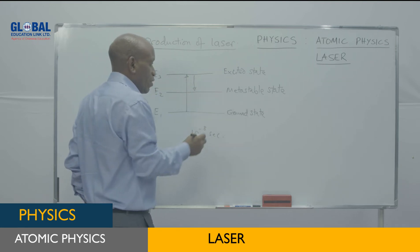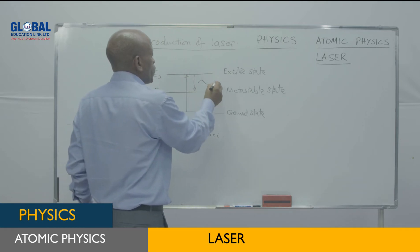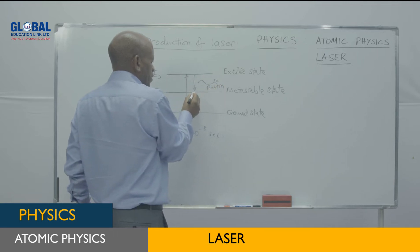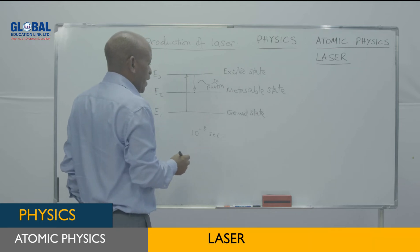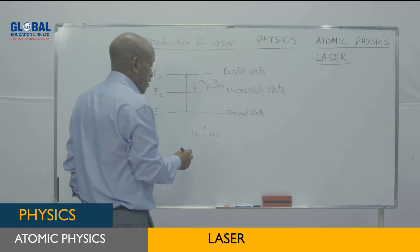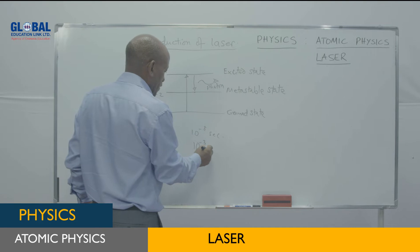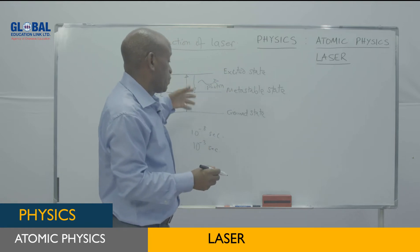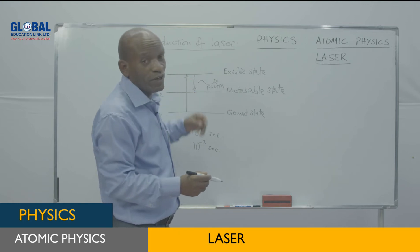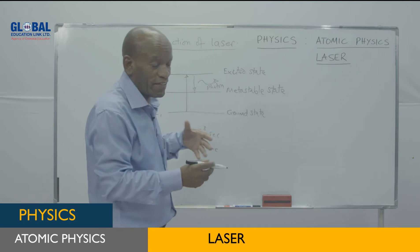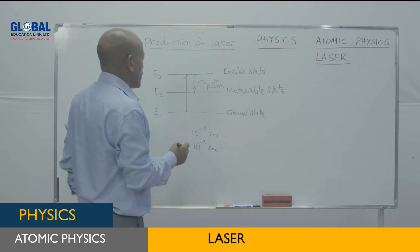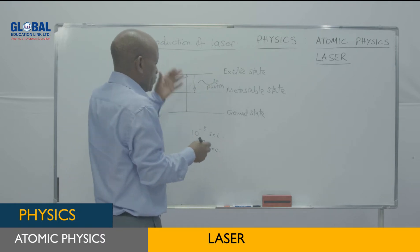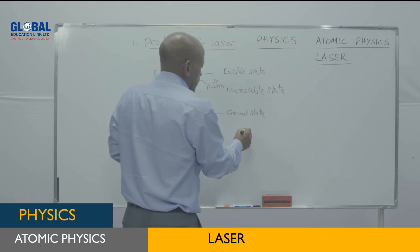Sometimes the electron loses energy and comes back to a lower energy level. If it goes back to the metastable state, it produces a photon — it loses energy in the form of a photon. The electron stays at the metastable state for a bit longer time than at the excited state, about 10⁻³ seconds. This happens for a single electron, but if the excitation process occurs, one electron moving to an excited state and coming back to metastable state might produce two photons.